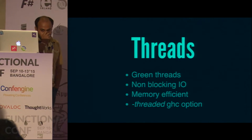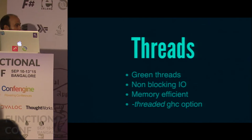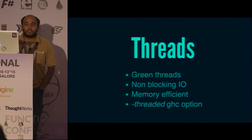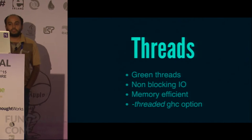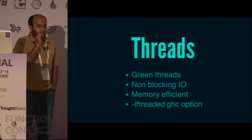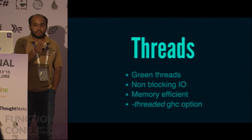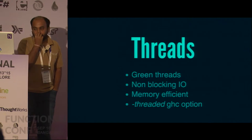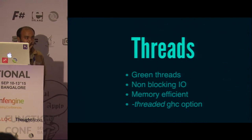The threads are really memory efficient — each thread takes about 32 KB of space, so it's very cheap in terms of memory. The third thing is non-blocking IO. All IO in Haskell is non-blocking. The Haskell IO manager, as soon as you do an IO call, suspends your green thread and waits till the IO call is finished.